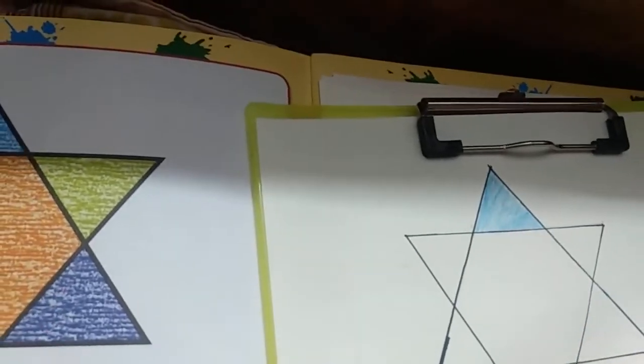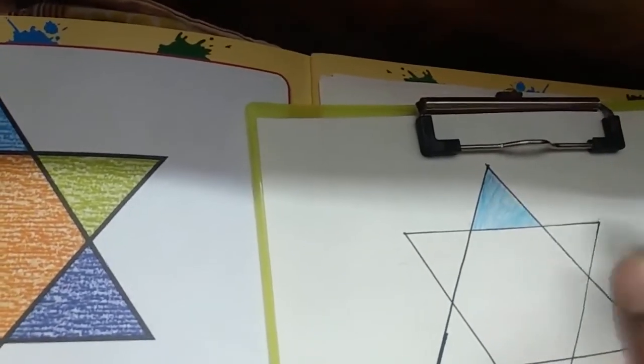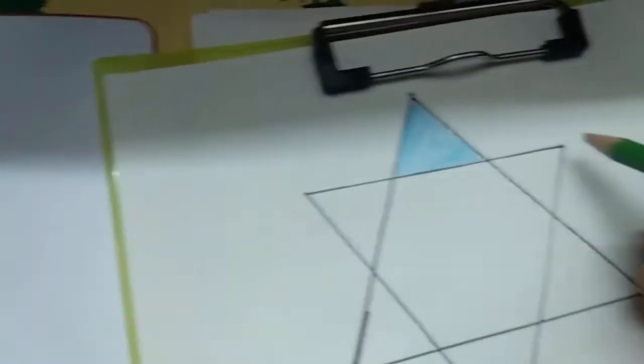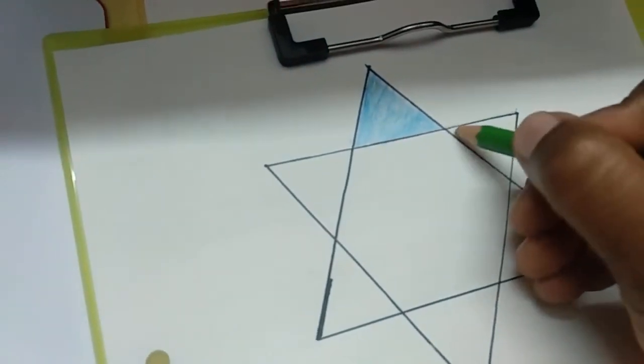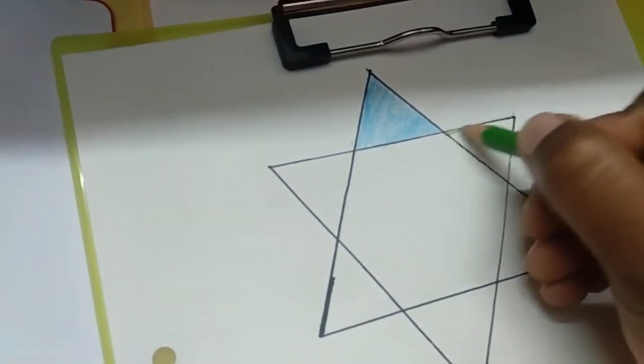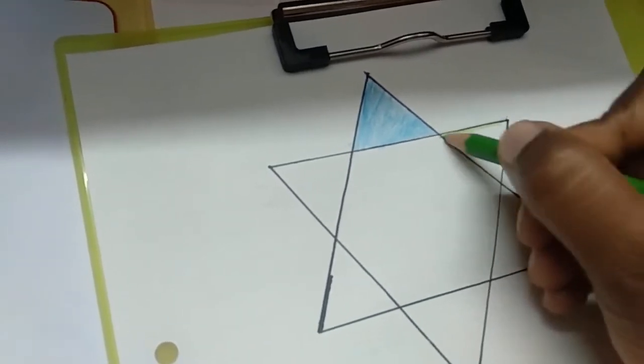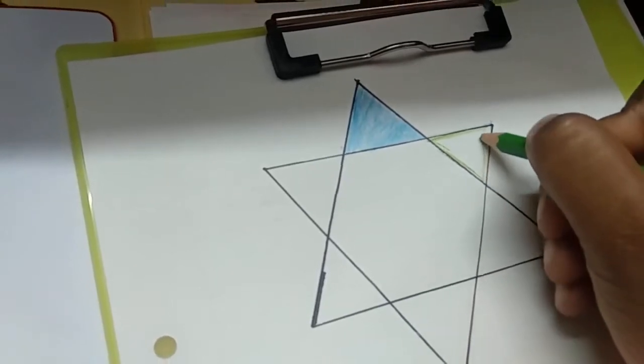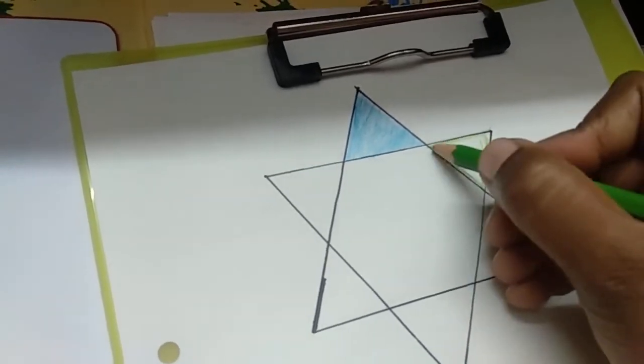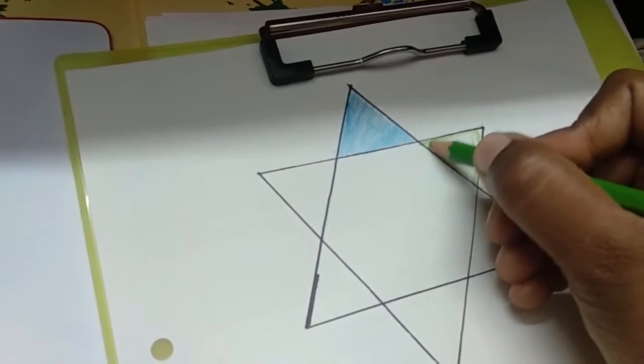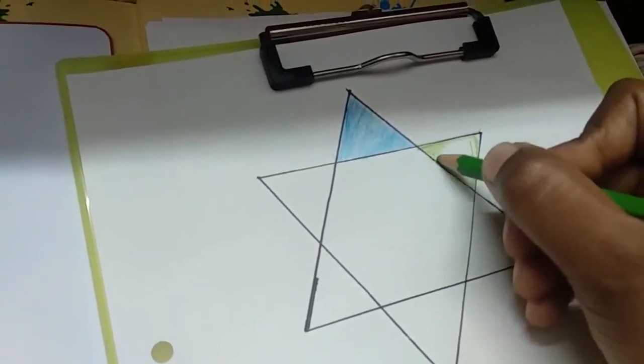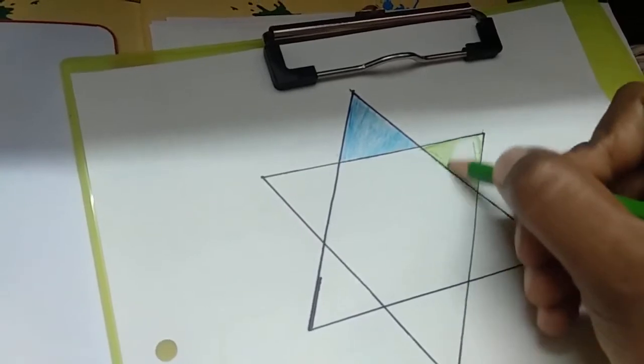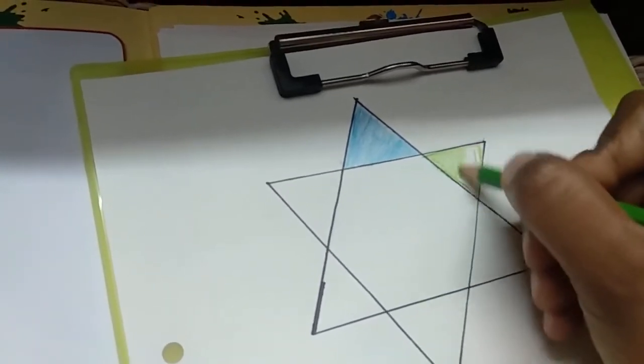Okay, so our first part coloring is done. Then we'll take the light green color. Children, slowly and in one direction try to fill color.